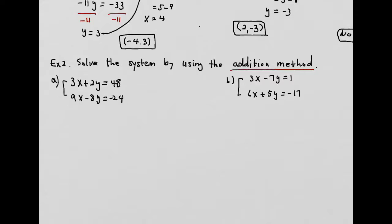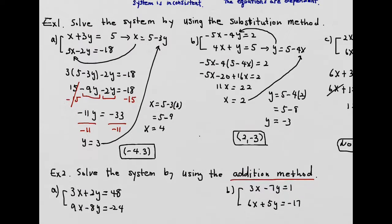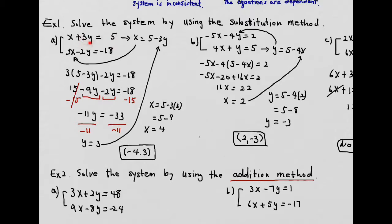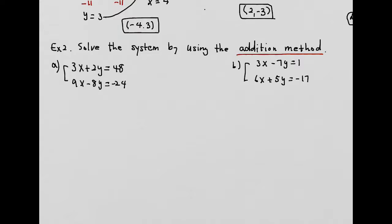If you have 2 variables with 2 equations, you can pick whichever method you want. The addition method means you add the two equations to get rid of one variable. Before, substitution let one variable equal an expression; addition eliminates a variable by requiring its coefficients to be opposites.